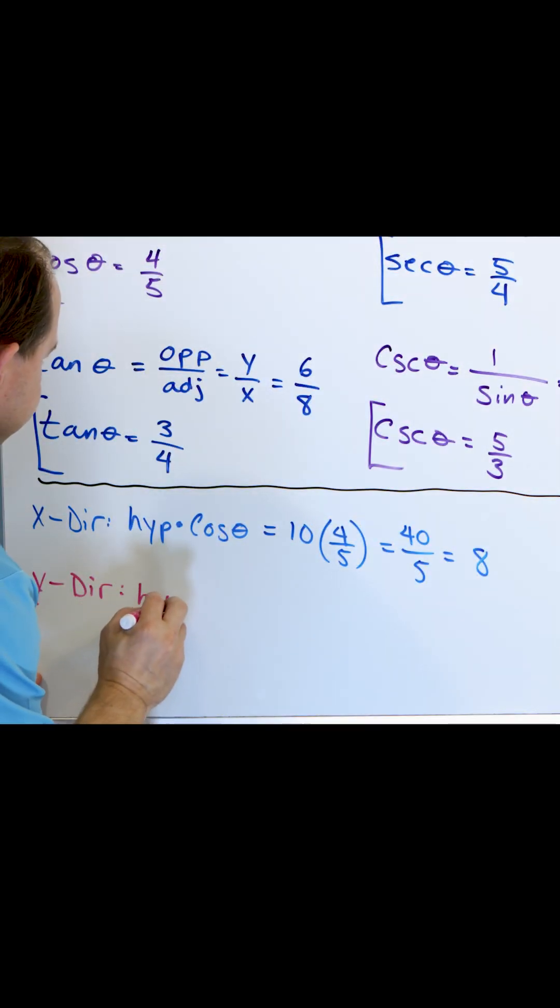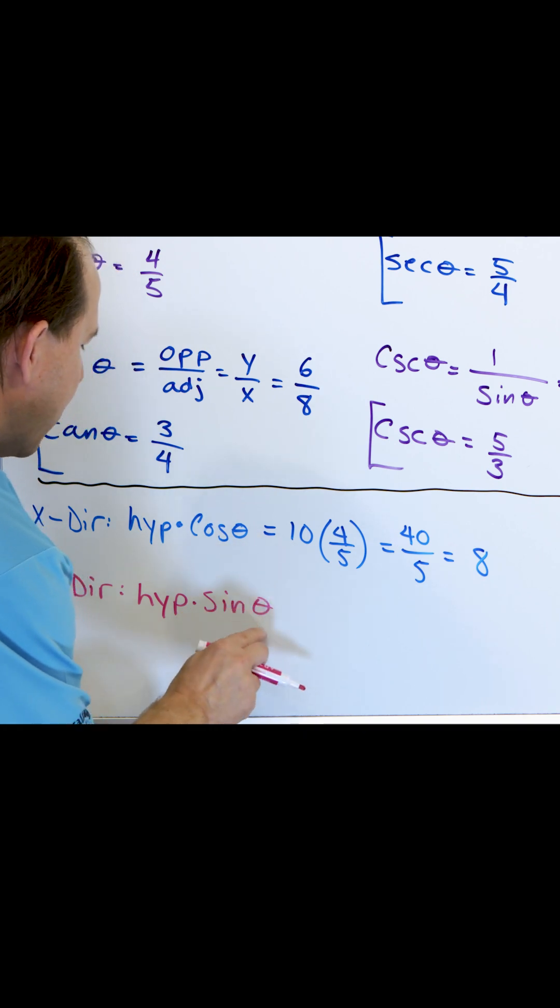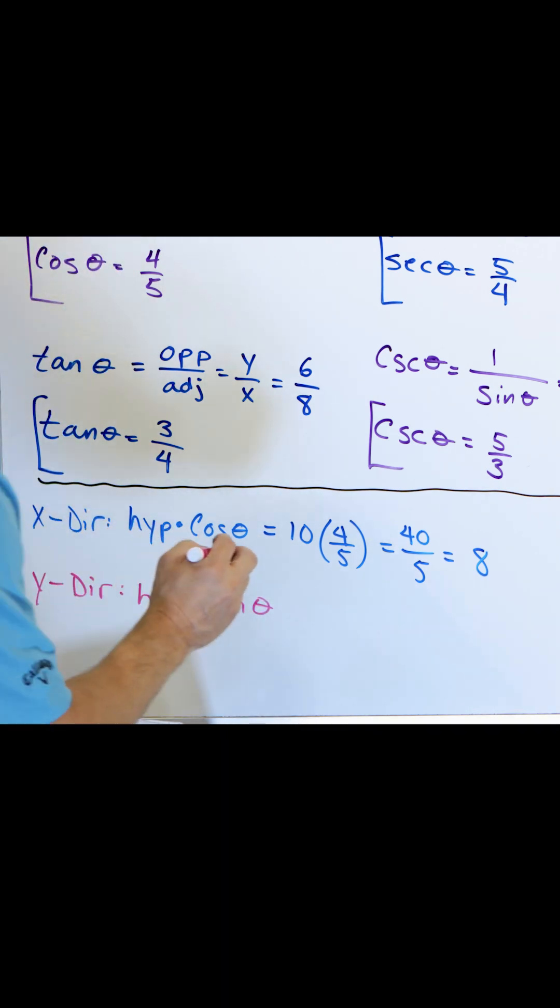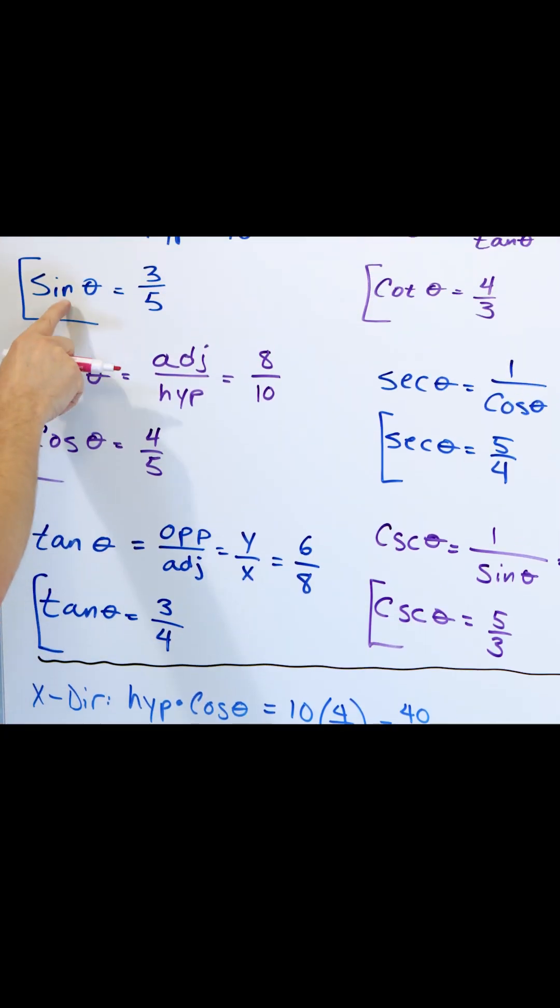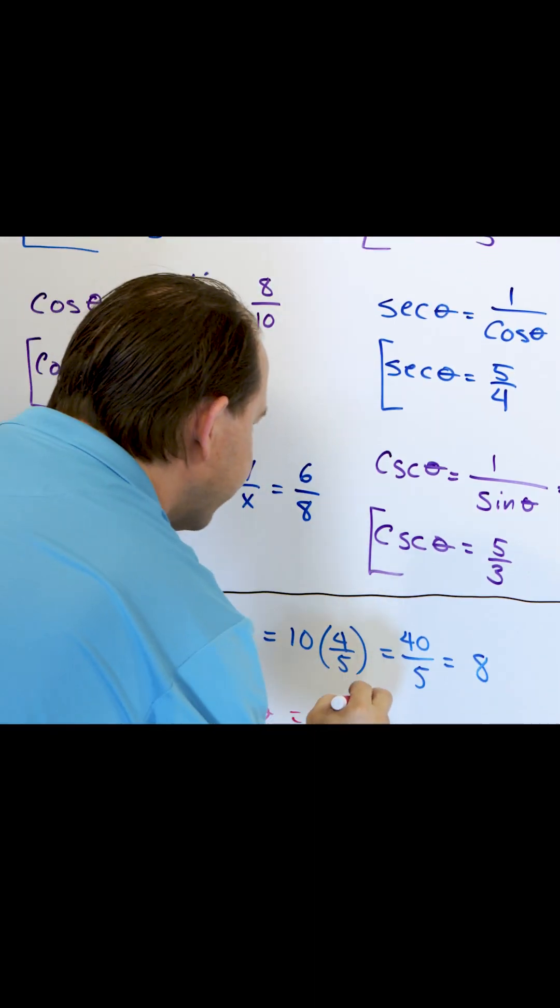If I take the hypotenuse and I multiply by the sine of the angle, it means I'm multiplying by the chopping factor in the y direction. The hypotenuse never changed. It's still 10, but the sine is the chopping factor in the y direction. It was three fifths.